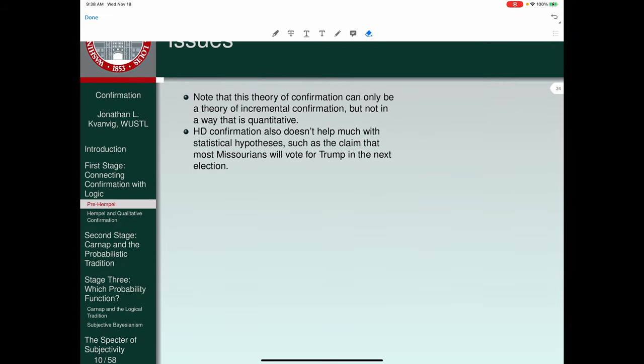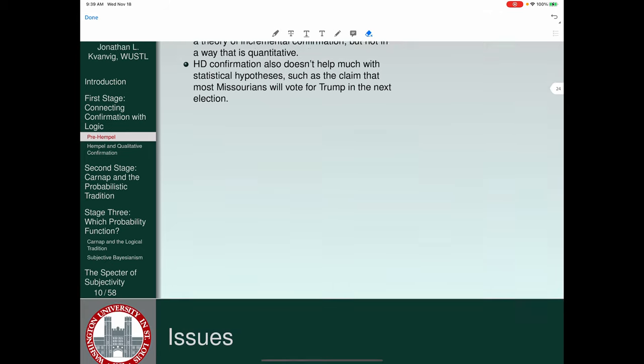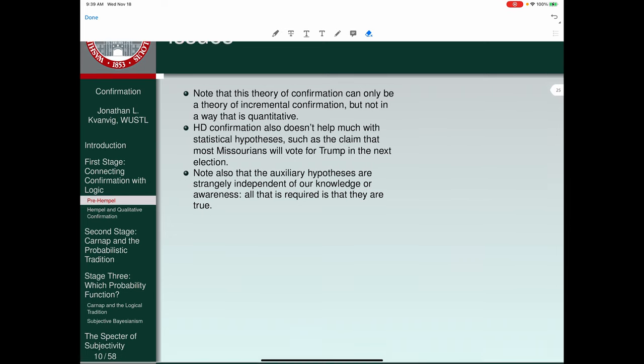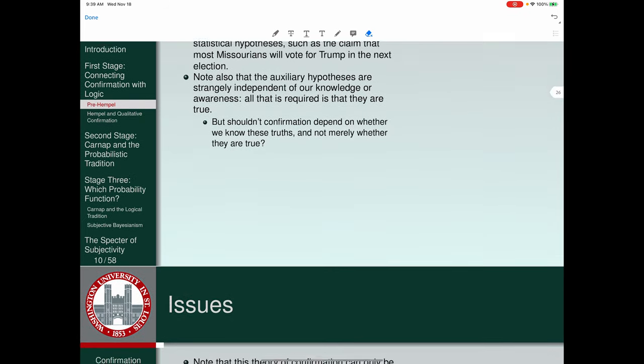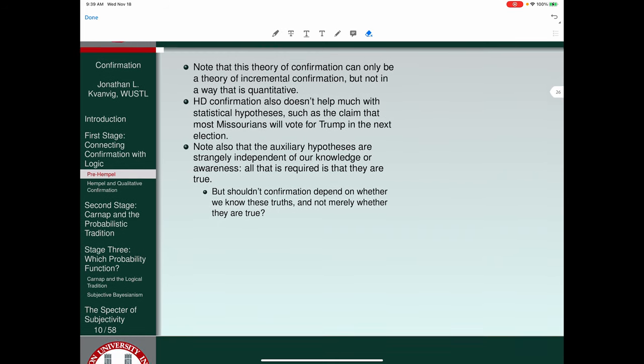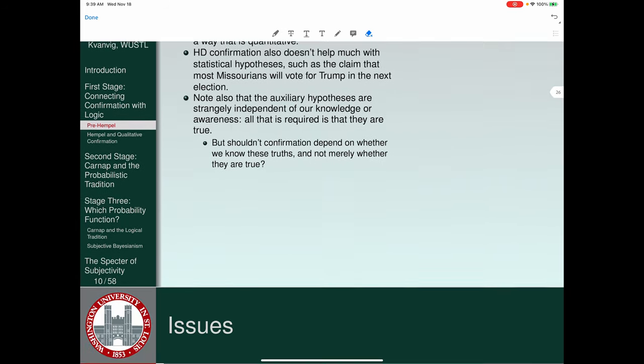HD confirmation also doesn't help much with statistical hypotheses, such as the claim that most Missourians voted for Trump, will vote for Trump in the next election. Assume I did this before November 4th. I don't honestly believe Trump's going to run again in 2024, but who knows? And if he did, probably most Missourians would vote for him again. Note also that the auxiliary hypotheses are strangely independent of our knowledge or awareness. All that's required on Ayer's theory is that they're true.